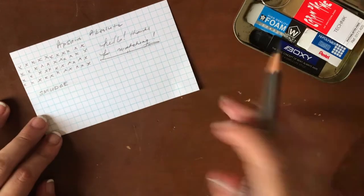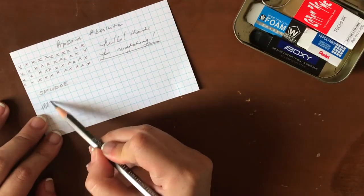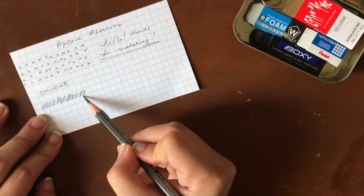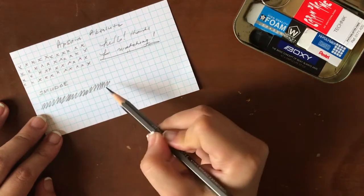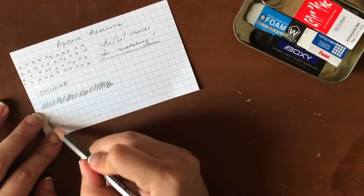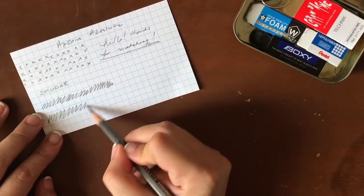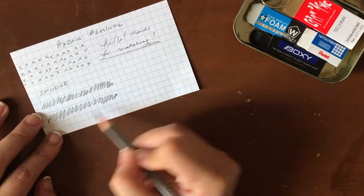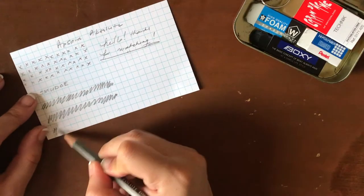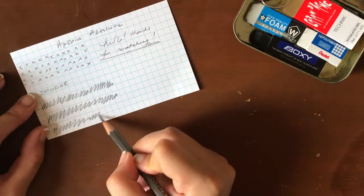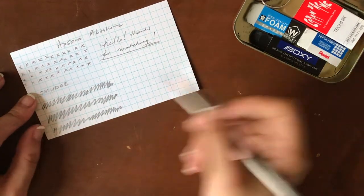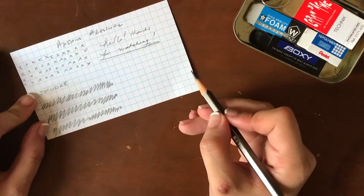And then finally, we'll do our three eraser tests. I'm going to do one line up here. I'm going to go about halfway through the card. And then we'll do the third one down here.